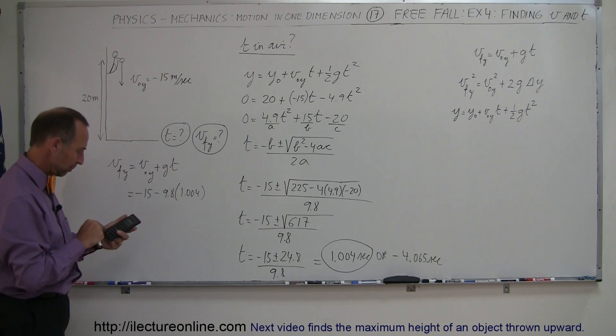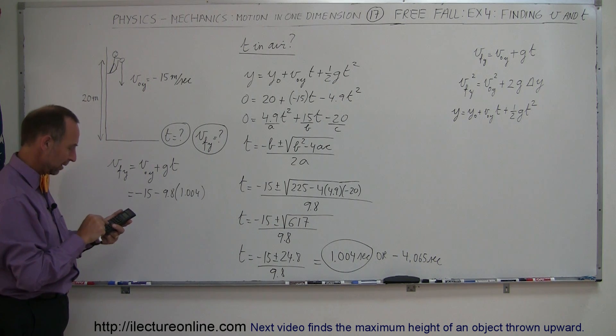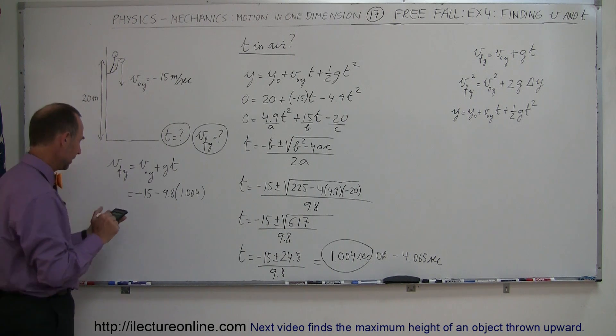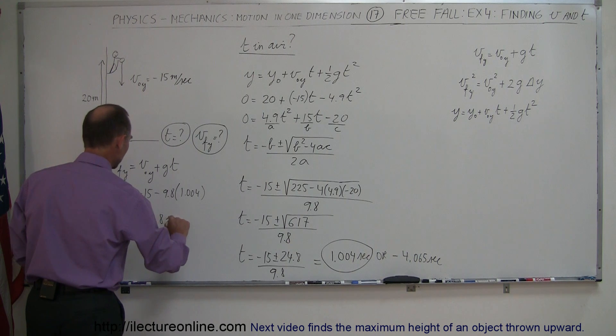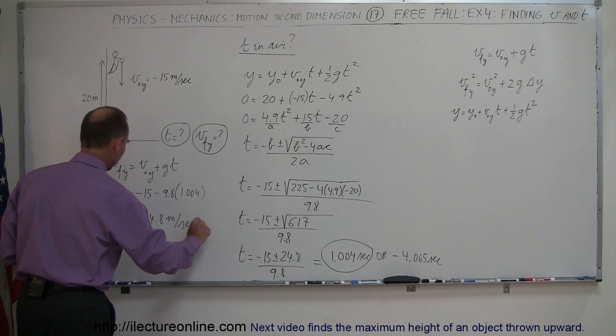All right, so 1.004 times 9.8, make that negative, subtract 15 from that, and notice this is minus 24.8 meters per second. That would be the final velocity in the y direction.